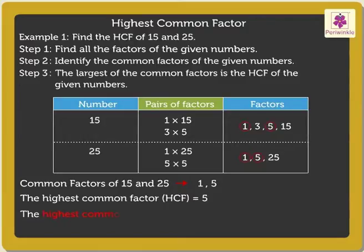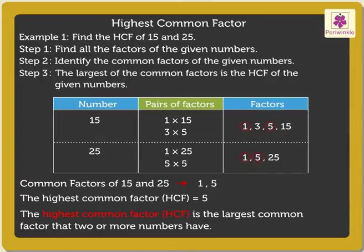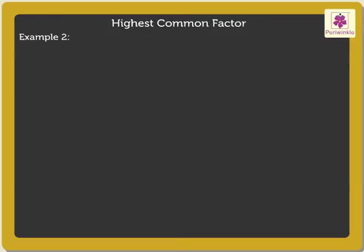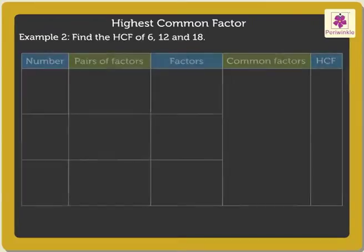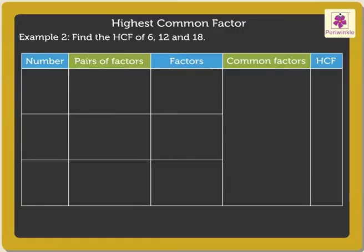We define the highest common factor as the largest common factor that two or more numbers have. Now let us solve one more example: find the HCF of 6, 12, and 18.